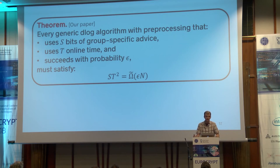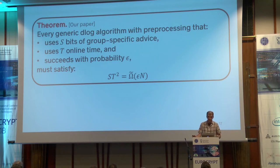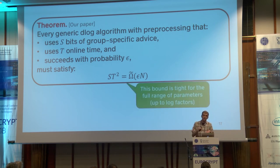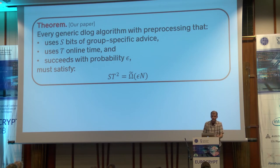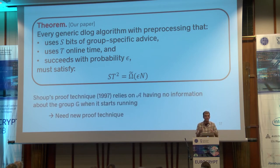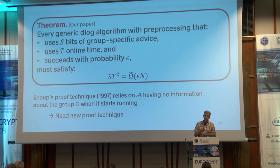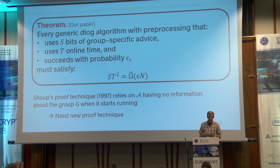What I'm going to tell you now is that disaster doesn't happen. The cube-root-of-n discrete log attack is optimal. We proved the following theorem: every generic discrete log algorithm that uses S bits of group-specific advice and online time t, and succeeds with probability epsilon, must satisfy S·t² ≥ ε·n. The attack I just showed proves this bound is tight, at least up to log factors. This is a robust result — we know the best you can do for any choice of advice size and online time. The standard technique by Victor Shoup crucially relies on the adversary having no information about the group. In our setting, the adversary has S bits of information about the group when it starts, so proving lower bounds here requires a different approach.